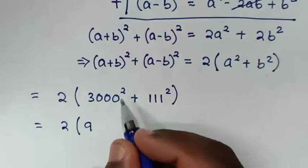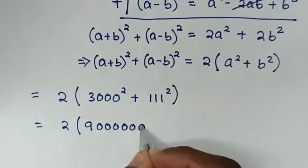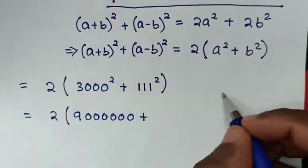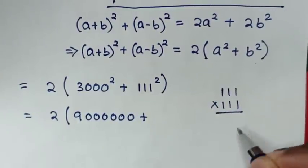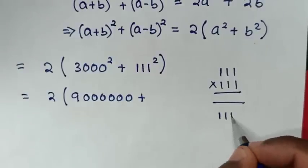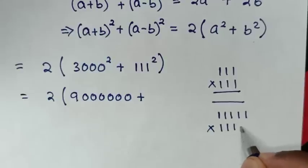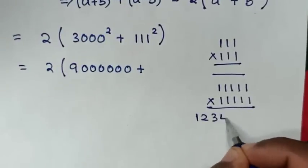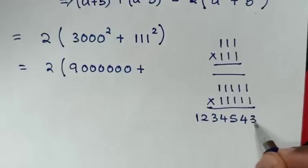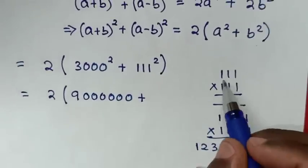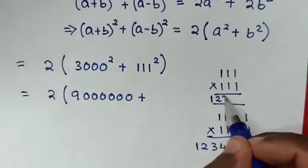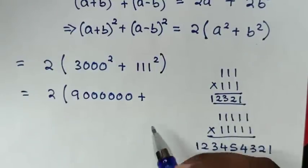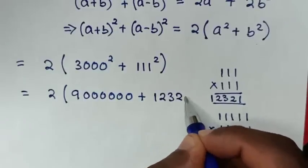3,000 squared gives 6 zeros, so it is 9,000,000. Then plus 111 squared, which is 111 times 111. Computing 111 times 111: the result increases then decreases — 1, 2, 3, 2, 1 — so 111 squared equals 12,321.